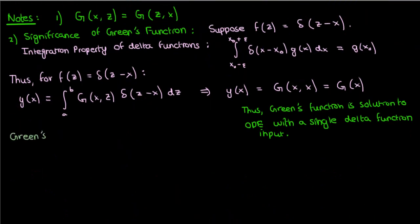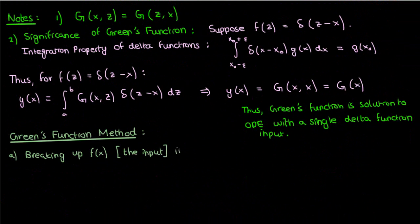So what are we even doing with this whole Green's function method? Well, we're breaking up our arbitrary input f of x into a series of impulses, a series of delta functions.